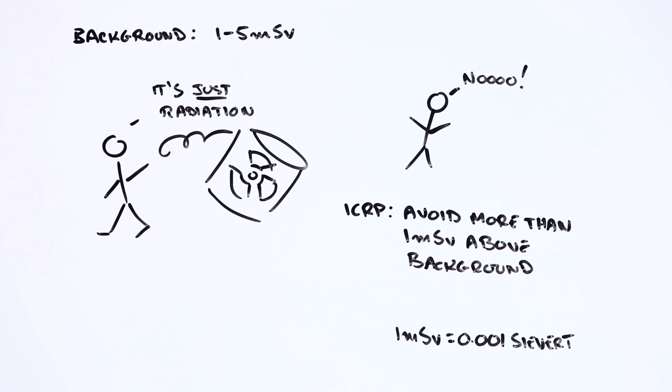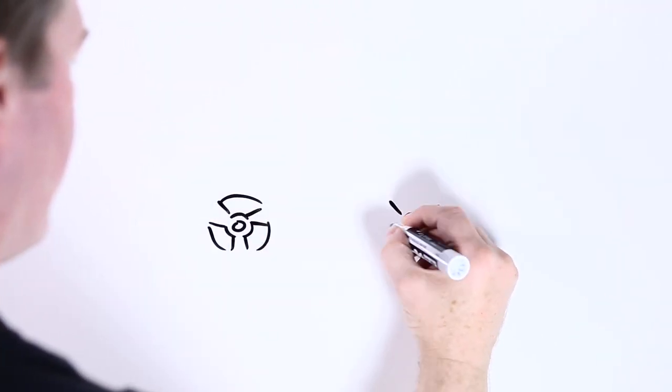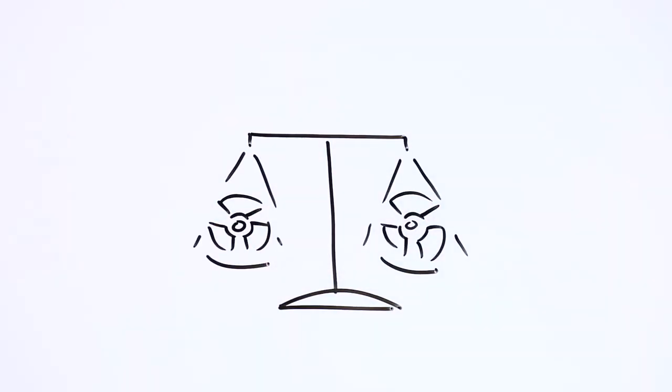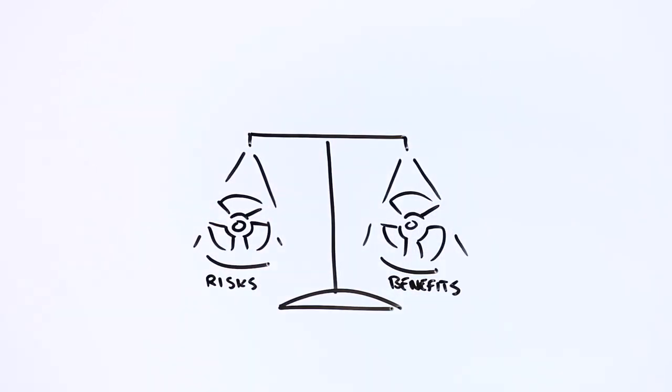But at least sieverts help us weigh up the pros and cons of radiation exposure, and they allow us to differentiate between exposures that are probably okay and those that are not.